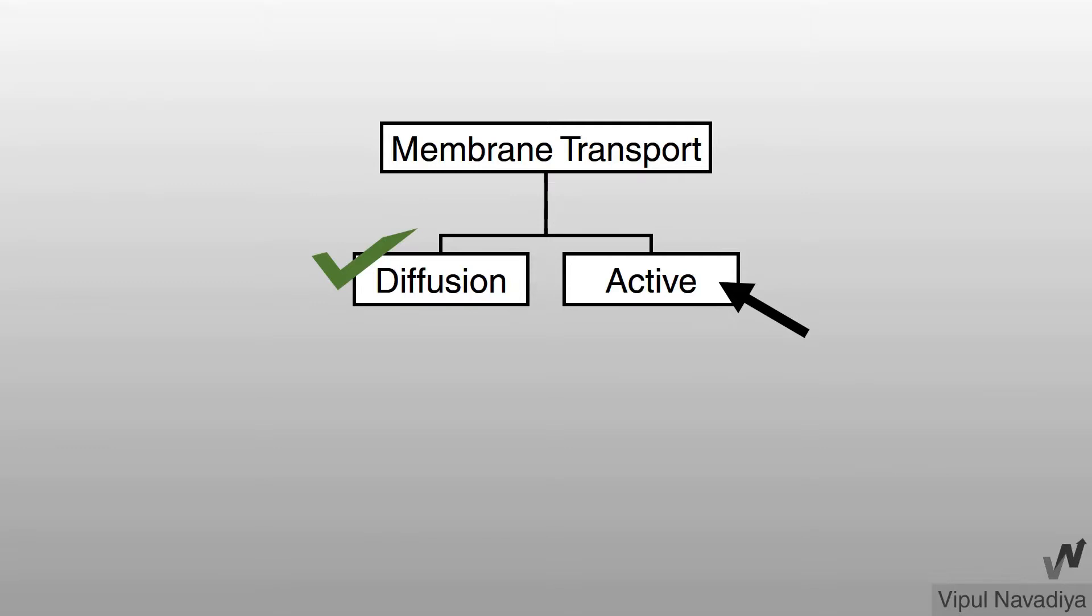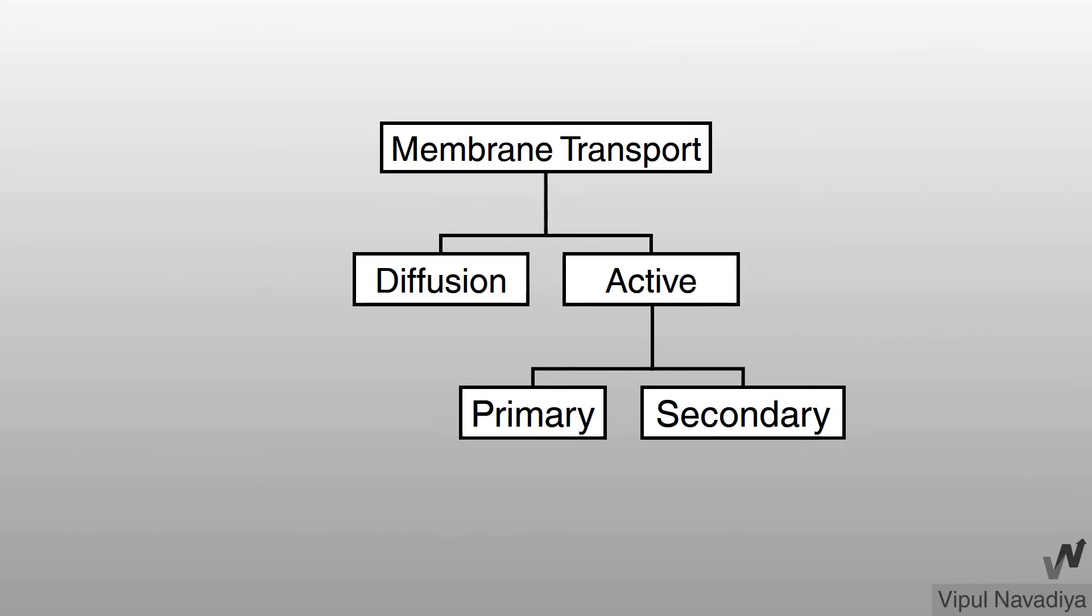Now, let's talk about active transport. In active transport, substance is transported against its electrochemical gradient. So, energy is required from outside. Based on source of energy, active transport can be divided into two types. Primary active transport and secondary active transport.